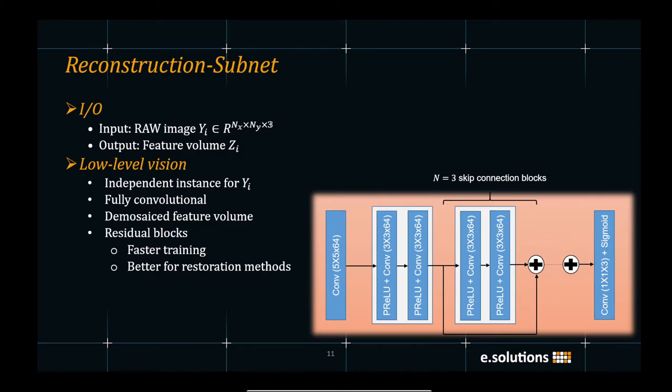The input to the reconstruction subnet is the raw exposure image with three channels YI and the output is a feature volume CI. The reconstruction subnet is an independent instance for the input exposure YI. This subnet is fully convolutional architecture. Also, the output of the subnet is a demosaic version of the feature volume.